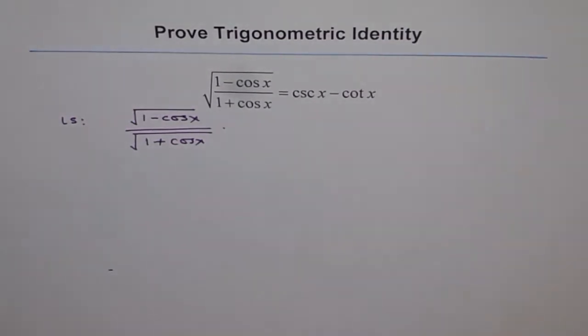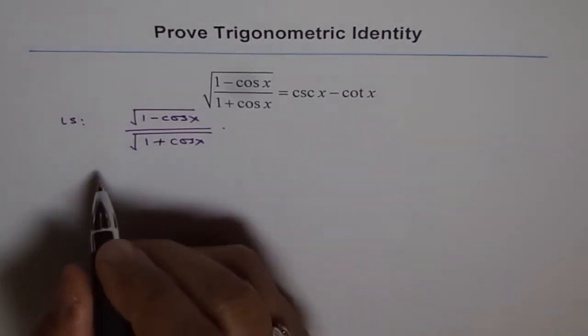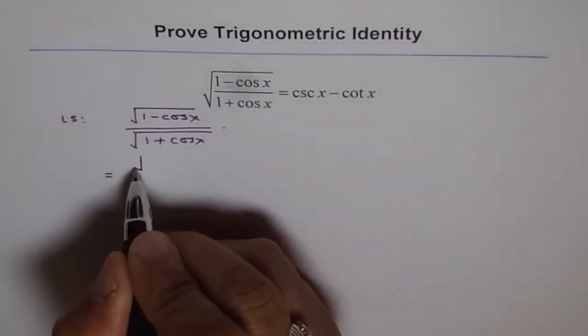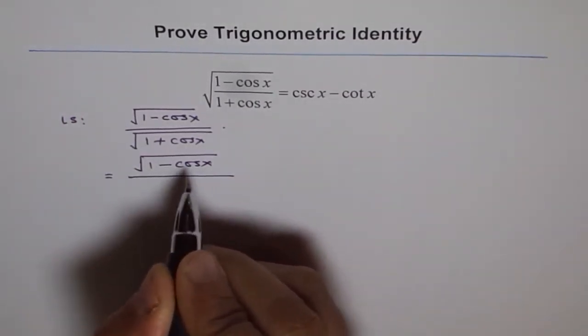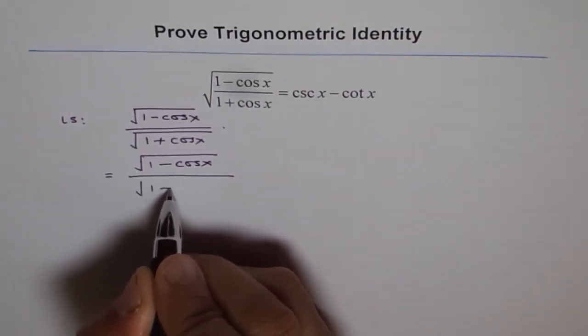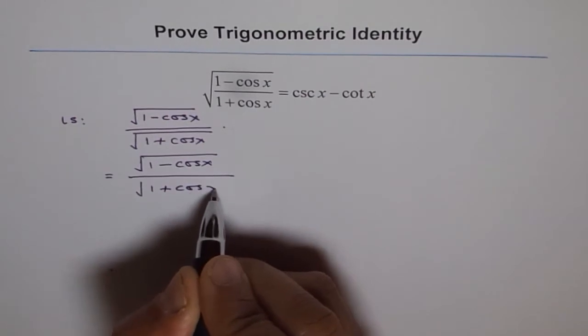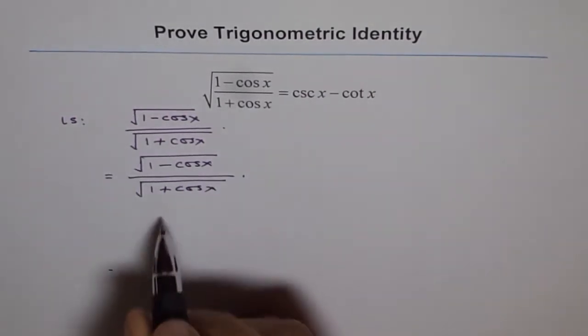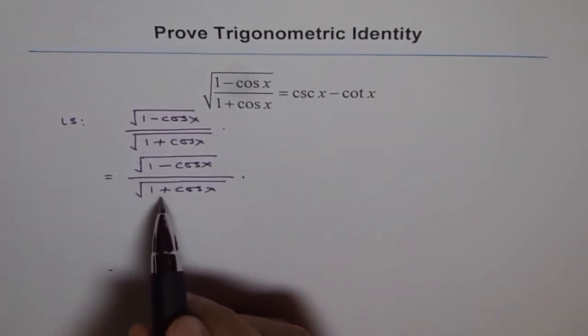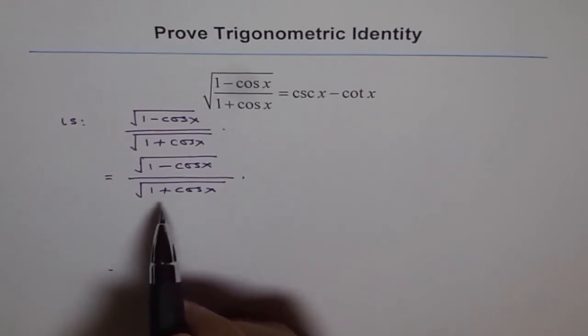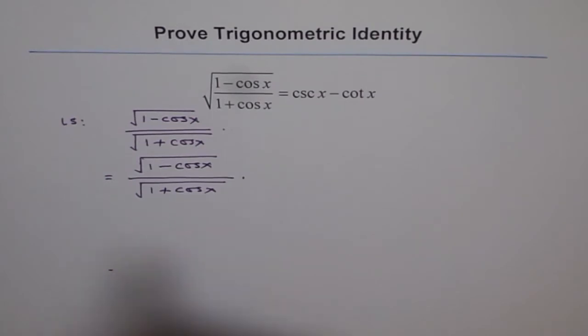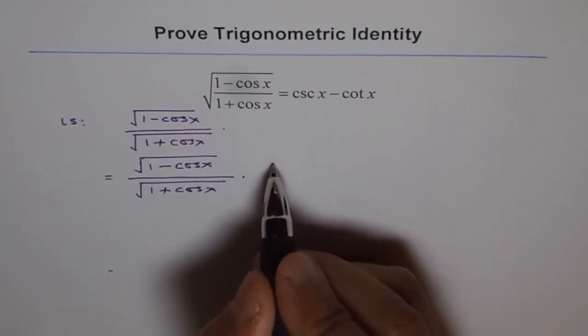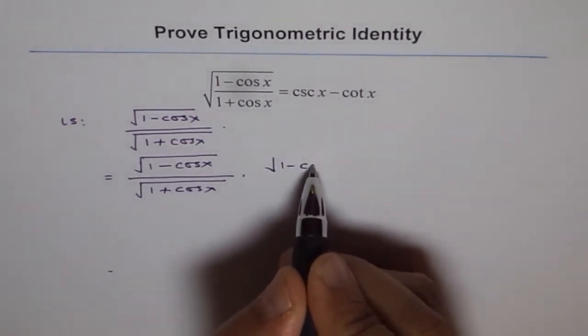Now to simplify this, the best thing is to rationalize it. Most of the time if you have square root, rationalization is the best approach. Rationalization means multiplying by conjugate and dividing by the same conjugate. Conjugate means if it is 1 plus cos x, make it 1 minus cos x, so we will multiply and divide by 1 minus cos x.